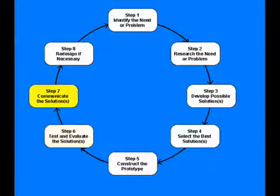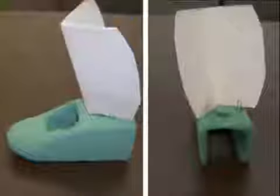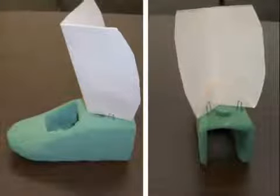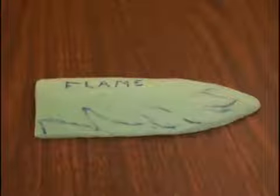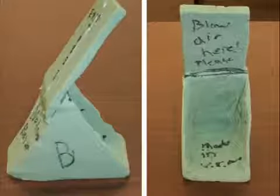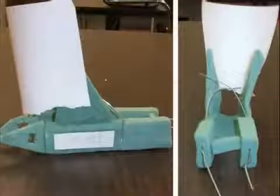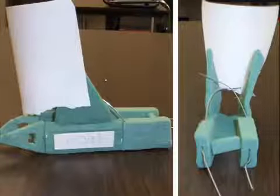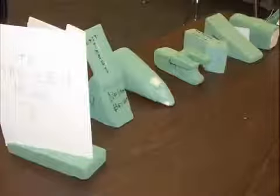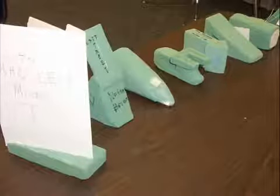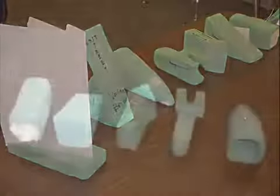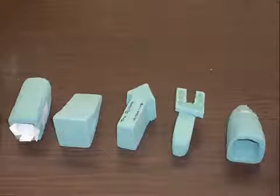The final two steps of the design process are to communicate your solution. The final steps were completed in our presentations to the class. The final presentations had to address the name of our vehicle and why we named it, the reasoning behind our vehicle, what you liked about our vehicle, what you would change about our vehicle, how it performed, and how we built it. If we had time to change our design, we would have gone through the steps of the design process again, but for this project we conclude with our present solution.